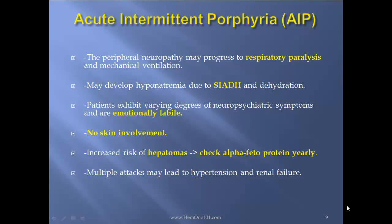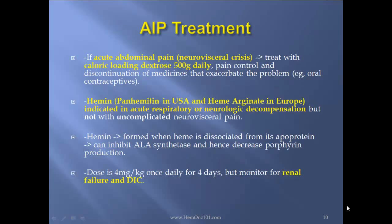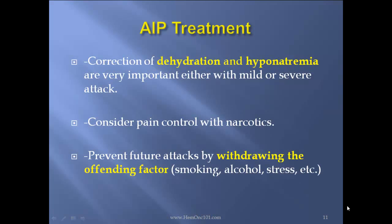Multiple attacks may lead to hypertension and renal failure. AIP treatment: if acute abdominal pain or neurovisceral crisis, treat with caloric loading — dextrose 500 grams daily. Use pain control and discontinue medicines that exacerbate the problem, such as oral contraceptives. Hemin (panhematin in the U.S. and hemarginate in Europe) is indicated in acute respiratory or neurologic decompensation, but not with uncomplicated neurovisceral pain. Hemin is formed when heme associates with apoprotein and can inhibit ALA synthetase, hence decreasing porphyrin production. Dose: 4 mg/kg once daily for 4 days, but monitor for renal failure and DIC. Correction of dehydration and hyponatremia is very important in either mild or severe attack. Consider pain control with narcotics and prevent future attacks by withdrawing offending factors such as smoking, alcohol, and stress.